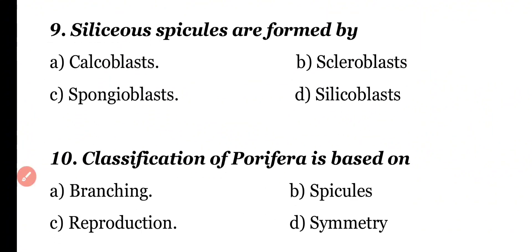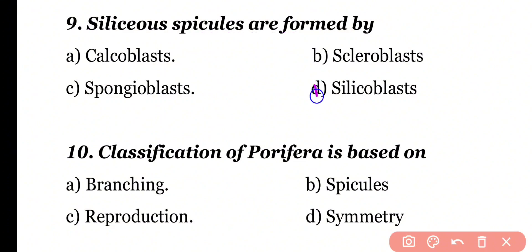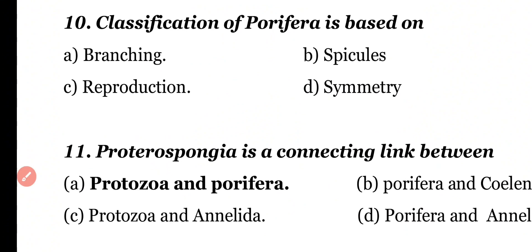Question number 9. Siliceous spicules are formed by: calcoblast, scleroblast, spongoblast, or silicoblast. Correct answer is option D. Silicoblasts are the scleroblast cells which are responsible for the formation of siliceous spicules.